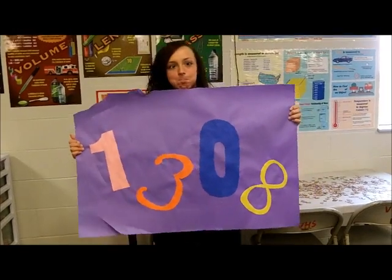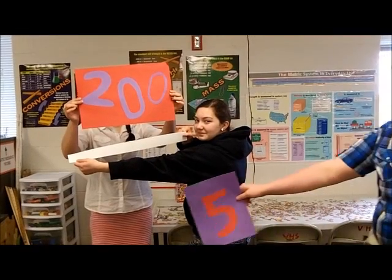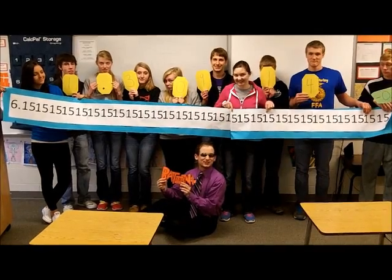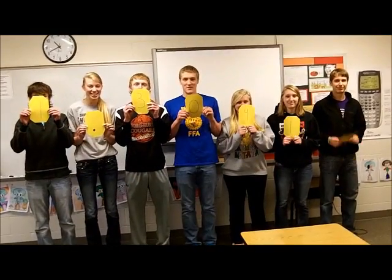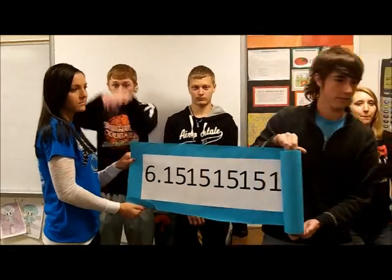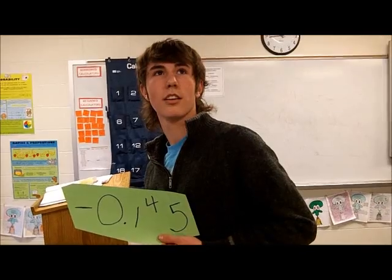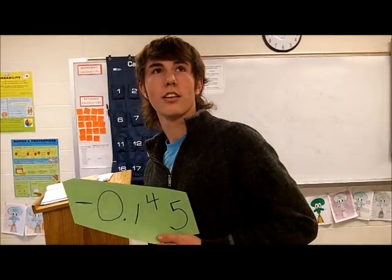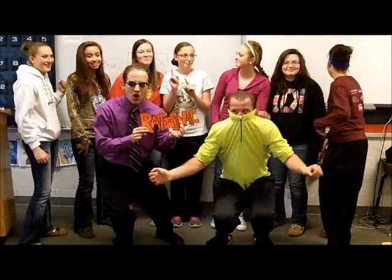1,308, negative 304, 200 all over 5. They are all rational. 1.30914, 6.15 repeating, negative 0.145. They are all rational.